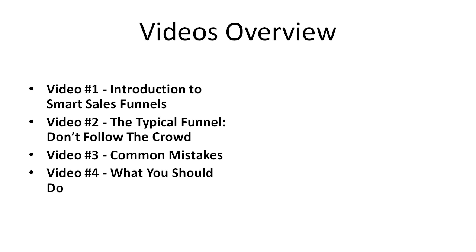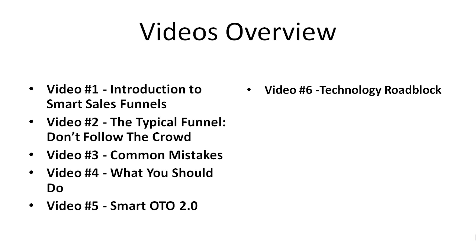We're going to talk about common mistakes so that you know what to avoid doing. Then we'll talk about what you should do — smart OTO one-time offers 2.0 — basically how to set up your one-time offers in such a way that you can segment your premium buyers versus your regular buyers. We'll also talk about the technology roadblock, and I'm going to show you exactly what software tools you can use to speed up the whole process of segmenting your premium buyers versus your regular buyers.